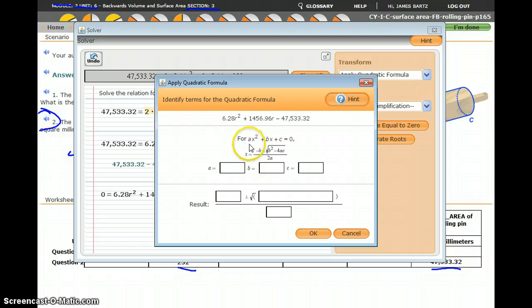You can see it says we use quadratic formula for quadratic equations of the form ax squared plus bx plus c equal to zero. And so a corresponds with the term in front of the squared variable, so for me that would be 6.28.